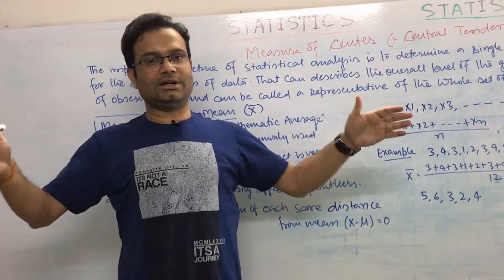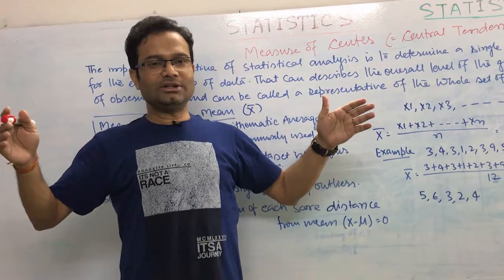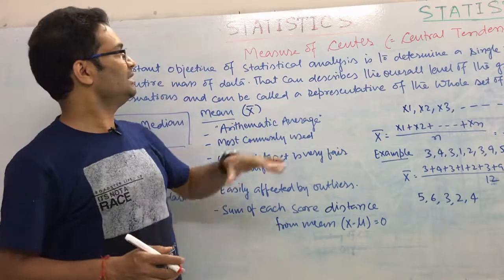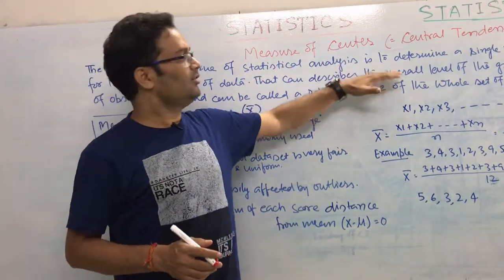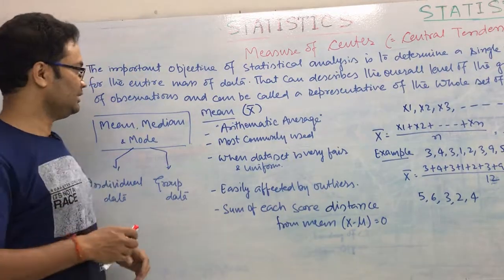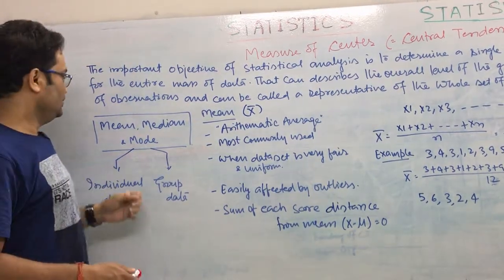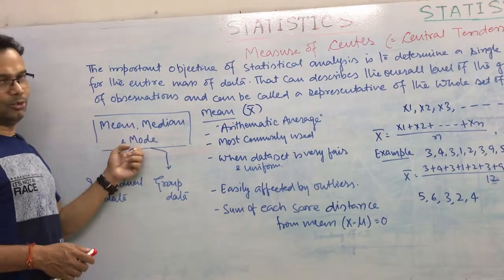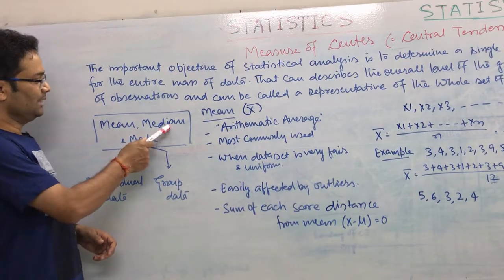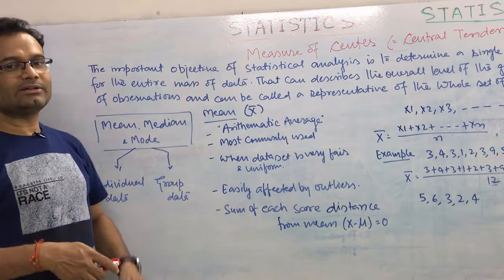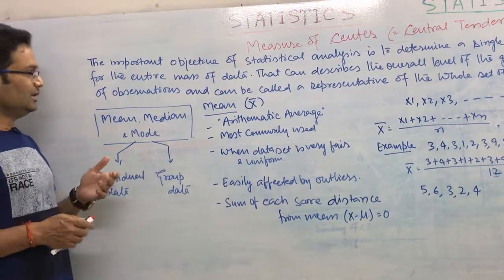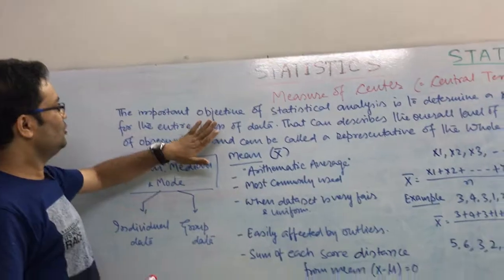So if you have huge data and you want to represent that huge data in one number, one sentence, that is called the measure of center or central tendency. We have many mechanisms to find the central tendency — we have mean, median, and mode. I will be explaining in which case you should use mean, median, and mode, and what are the different kinds of calculations behind all three. So first let us go for the definition.